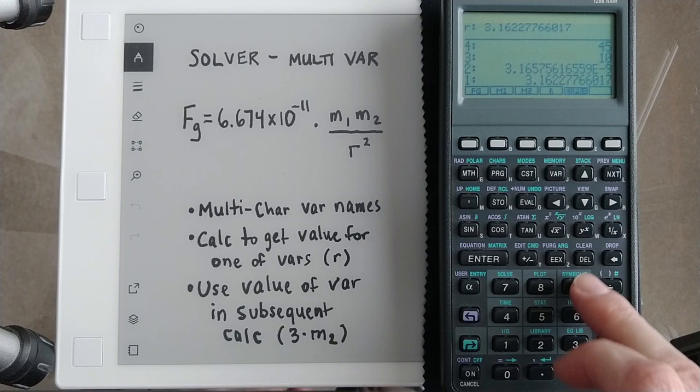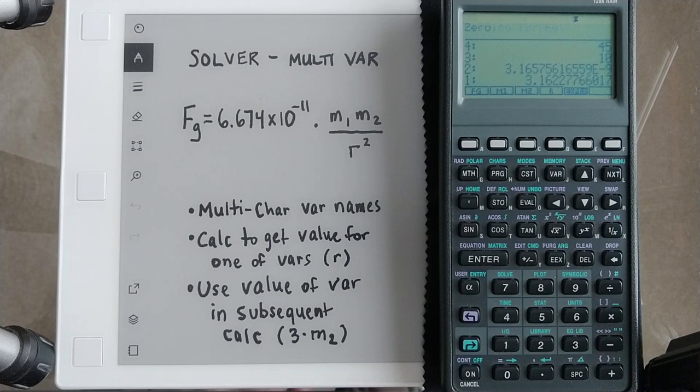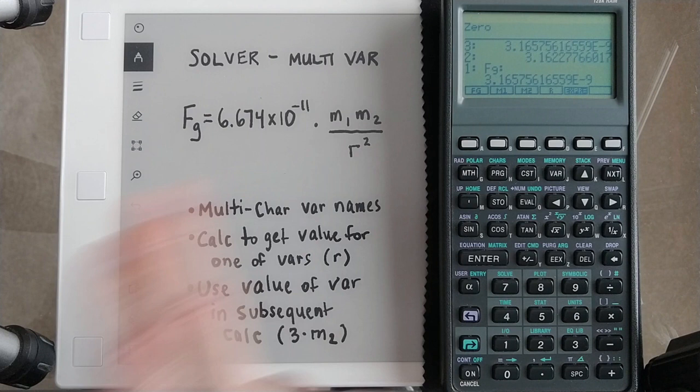And then if I want to solve for fg, I hit purple and then fg. And we get our answer. I didn't have to do anything to use these special variable names. They just work.